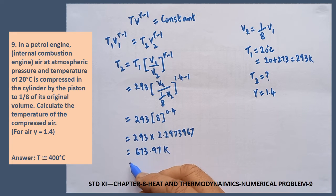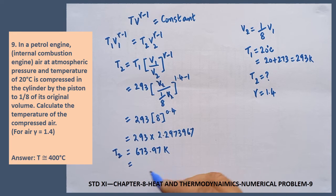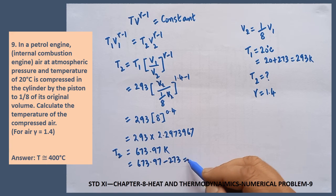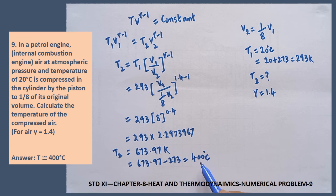Now, this is to be converted into degree Celsius. T2 is equal to 673.97 minus 273, that is approximately equal to 400 degree Celsius. So this is the temperature of the compressed air, very interesting problem.